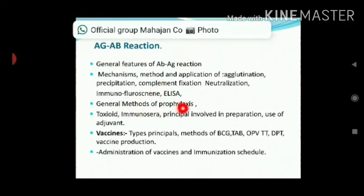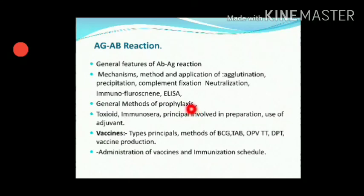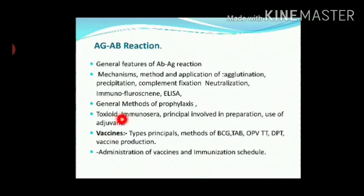General methods of prophylaxis — prophylaxis means preventive measures such as immunization. Topics include toxoid and immune serum. Toxoids are the means used to treat against toxins — toxins of bacteria and certain other types. Tetanus toxoid, diphtheria toxoid — all these are immune serum, that is serum-based immune therapy.